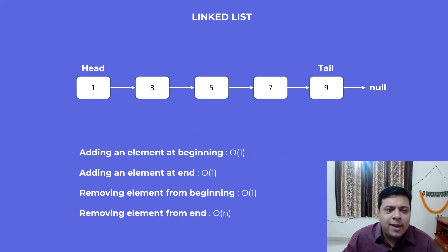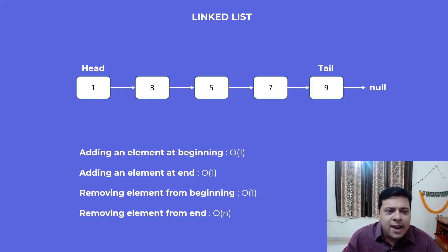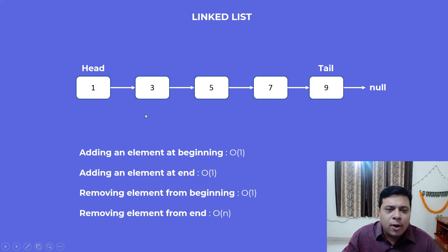Before we go any further, let's understand what a linked list is. A linked list is a collection of nodes where each node points to the next node. If you see the example on the screen, we have node 1 pointing to node 3, node 3 pointing to 5, 5 pointing to 7, and 7 pointing to 9. This is how a linked list maintains its structure — each node knows about the next node.